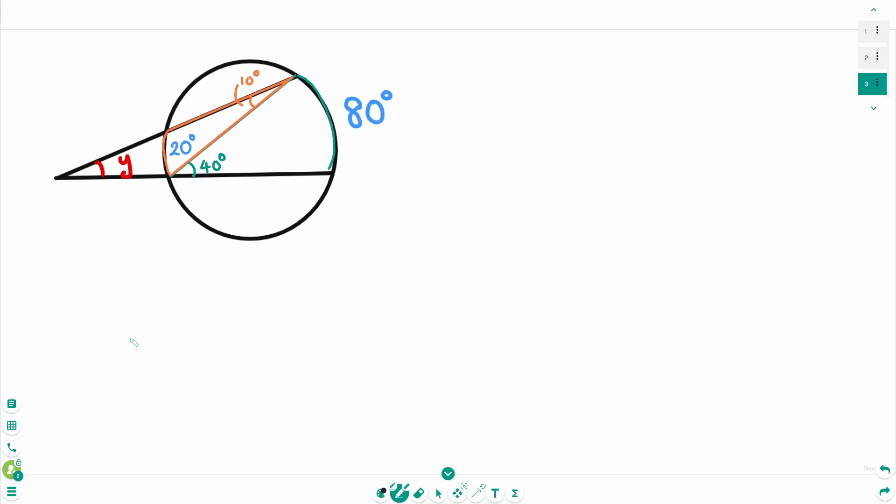Then use your external angle theorem. This angle is y, 10 degrees, 40 degrees. Then y plus 10 degrees equals 40 degrees. That means y equals 30 degrees.